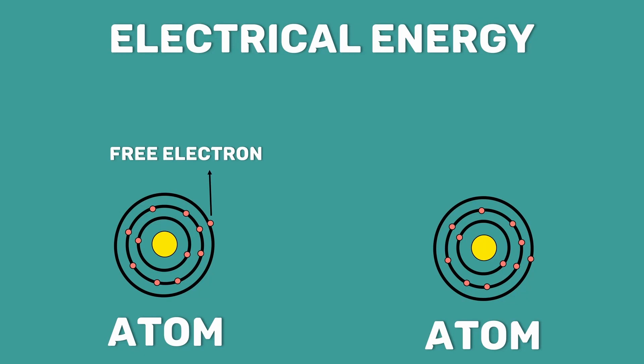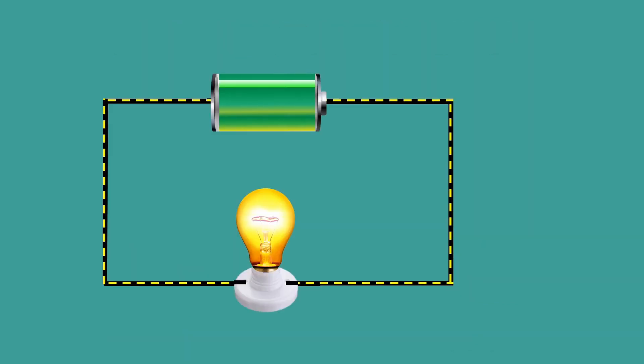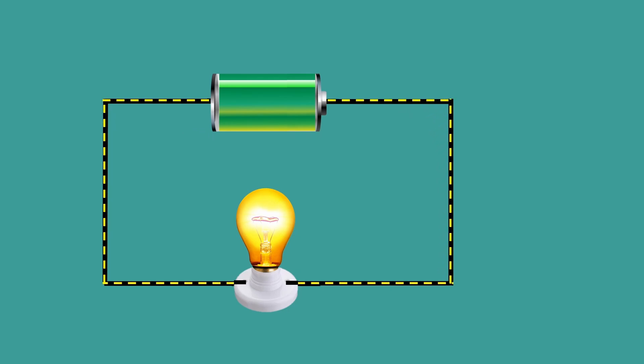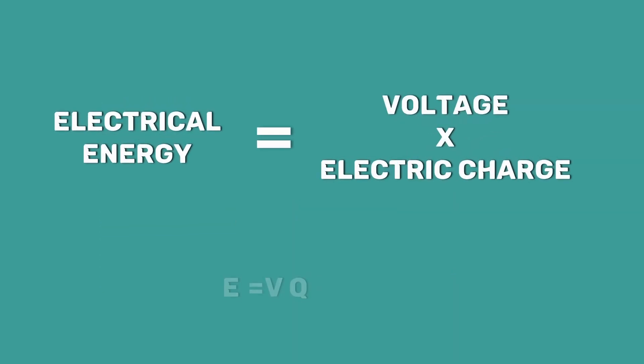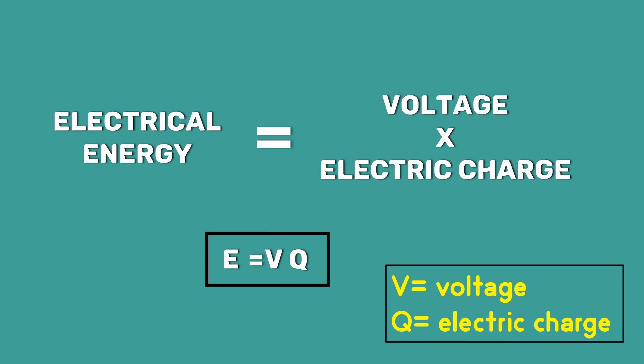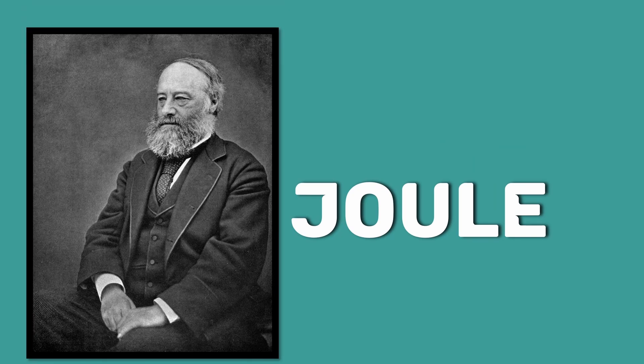Electrical energy is the work done to move electrons. Voltage is like the electrical force that pushes the electrons through the conductor. Therefore, the electrical energy is expressed as voltage multiplied by electric charge. The SI unit of energy is Joules. It is named after the English physicist James Prescott Joule.